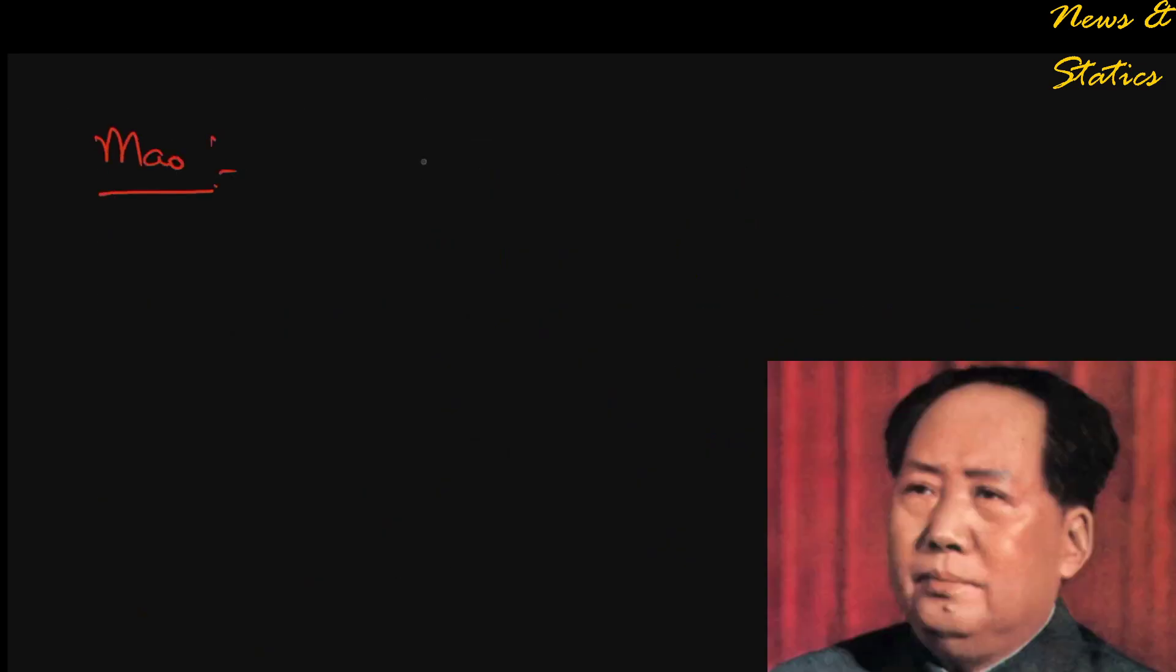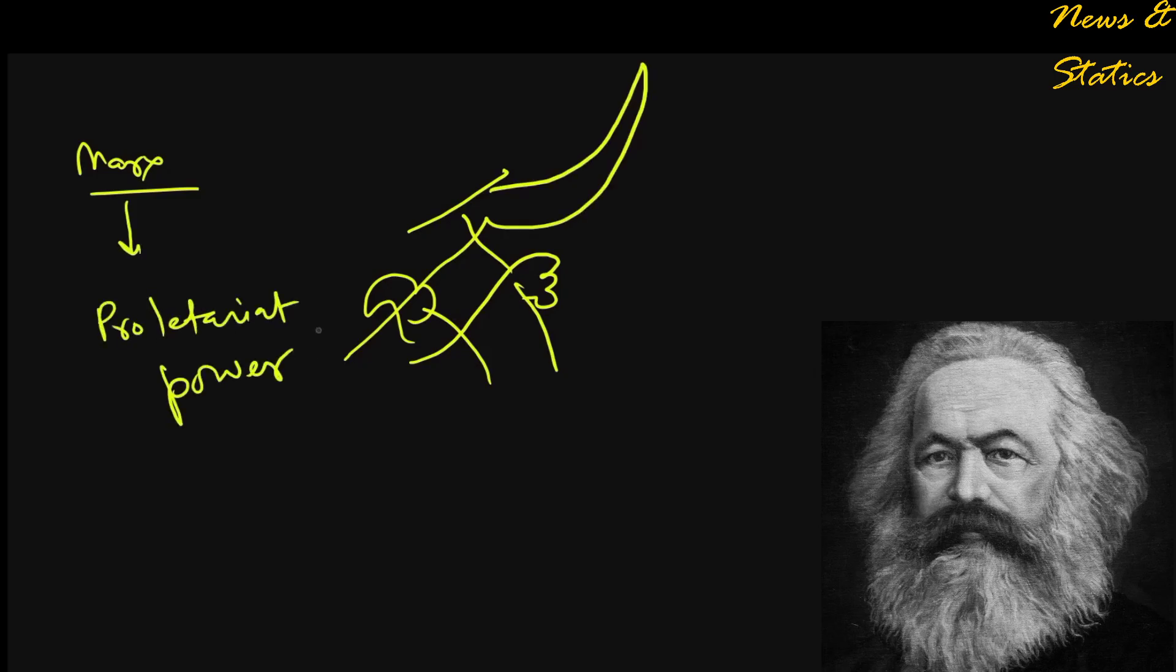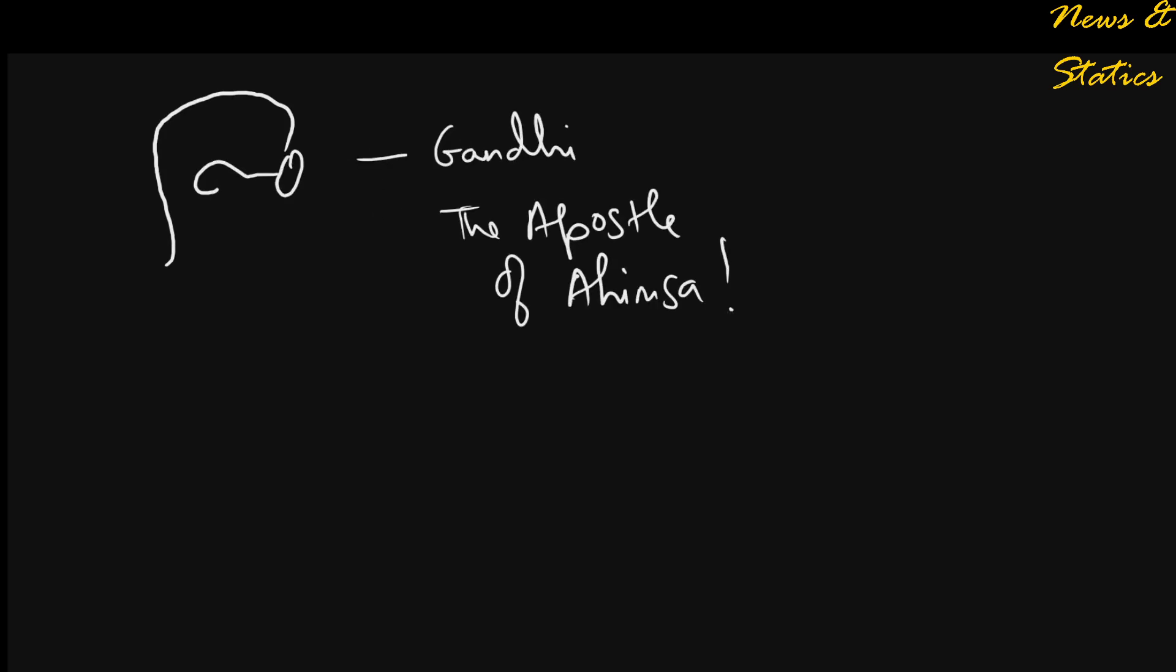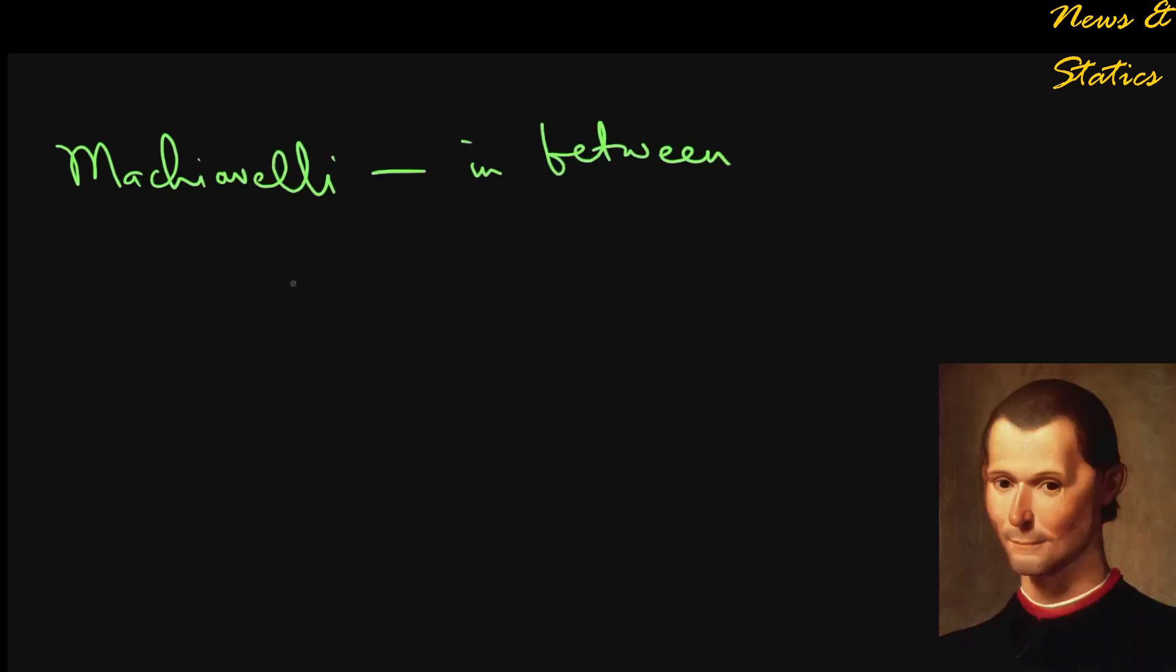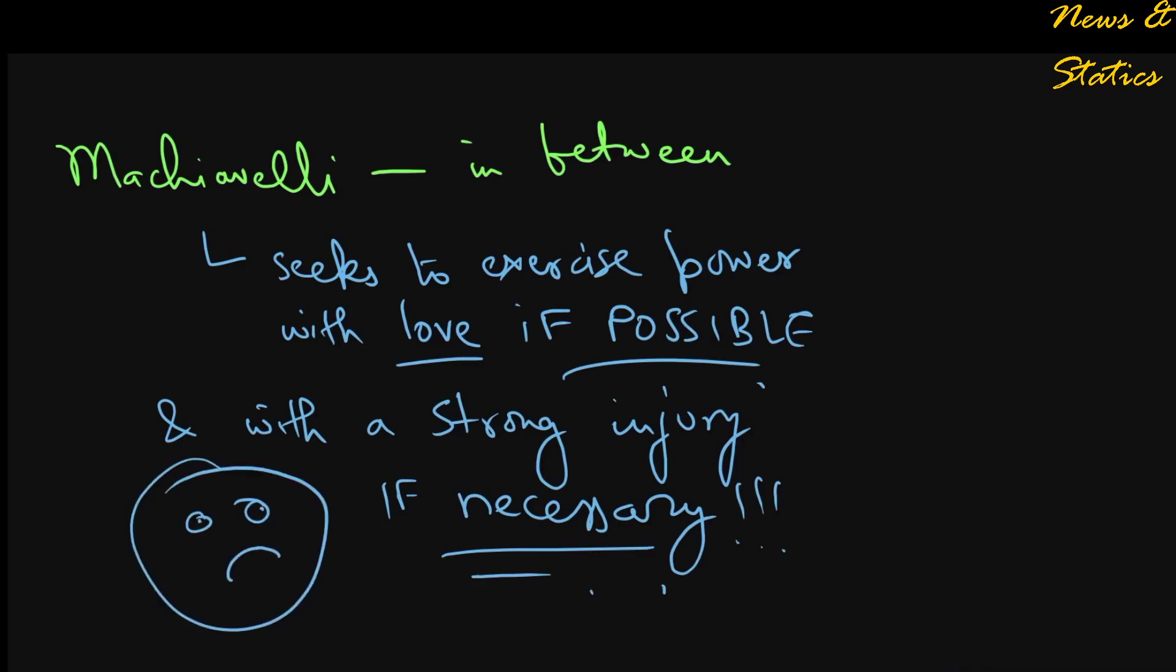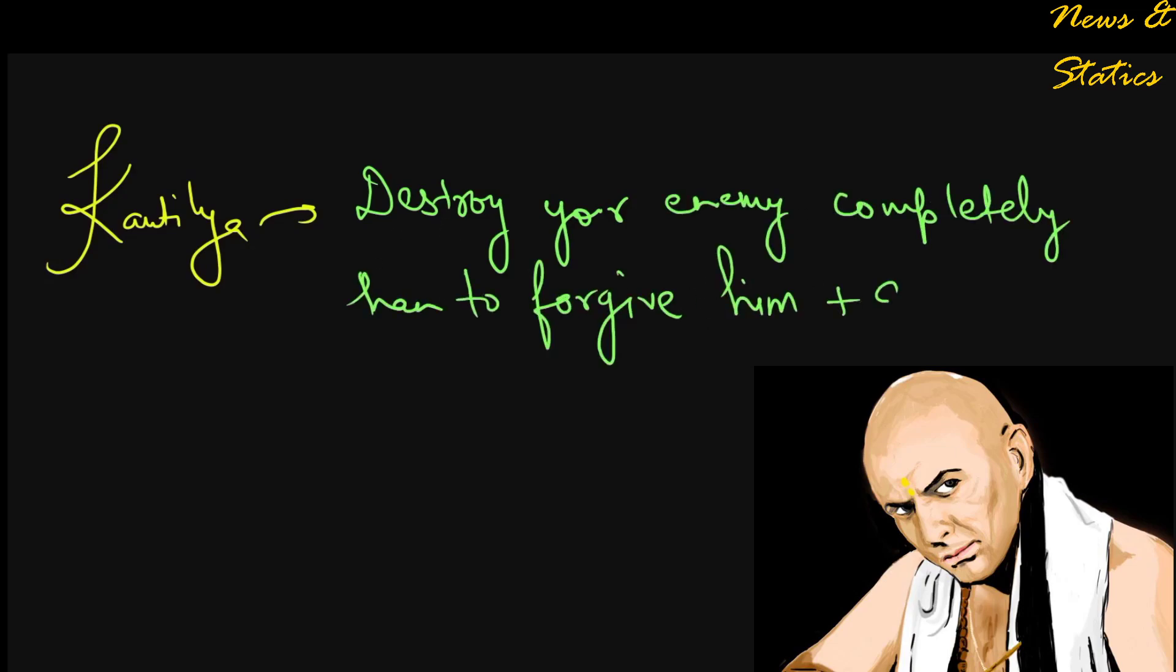Mao Zedong claimed that power flows from the barrel of a gun. Karl Marx believed that power of the proletariat should be expressed as a violent revolution. Mahatma Gandhi on the other hand saw power in Ahimsa, the force of non-violence. But Machiavelli was in between, seeking to exercise power with love and kindness if possible, but if necessary with an injury that leaves no scope for revenge.